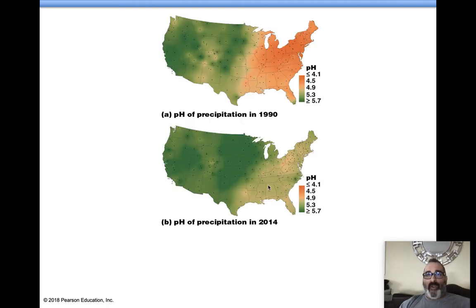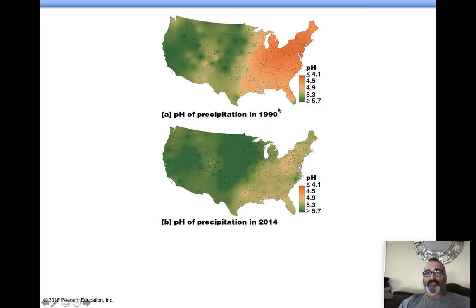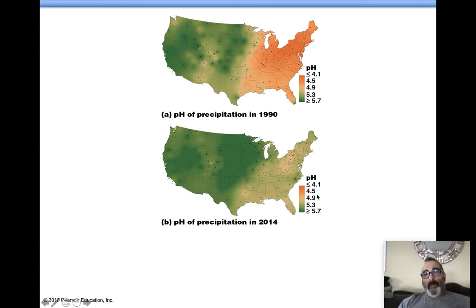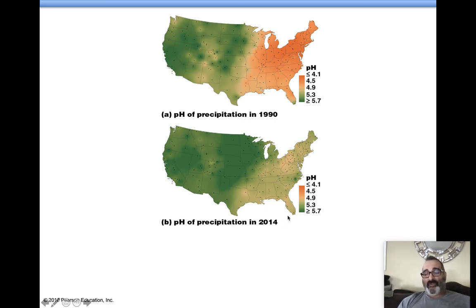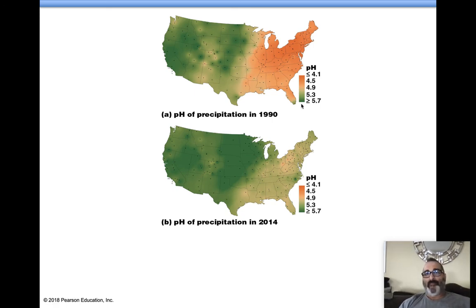Comparing US pH of precipitation in the 1990s versus 2014 shows improvement. It's gotten better because of more laws and regulations — burning less carbon, using scrubbers to pull carbon out, cars burning more cleanly, and a shift in thinking. The green areas on the map show pH around 5.6, which is the typical average for normal rainfall.